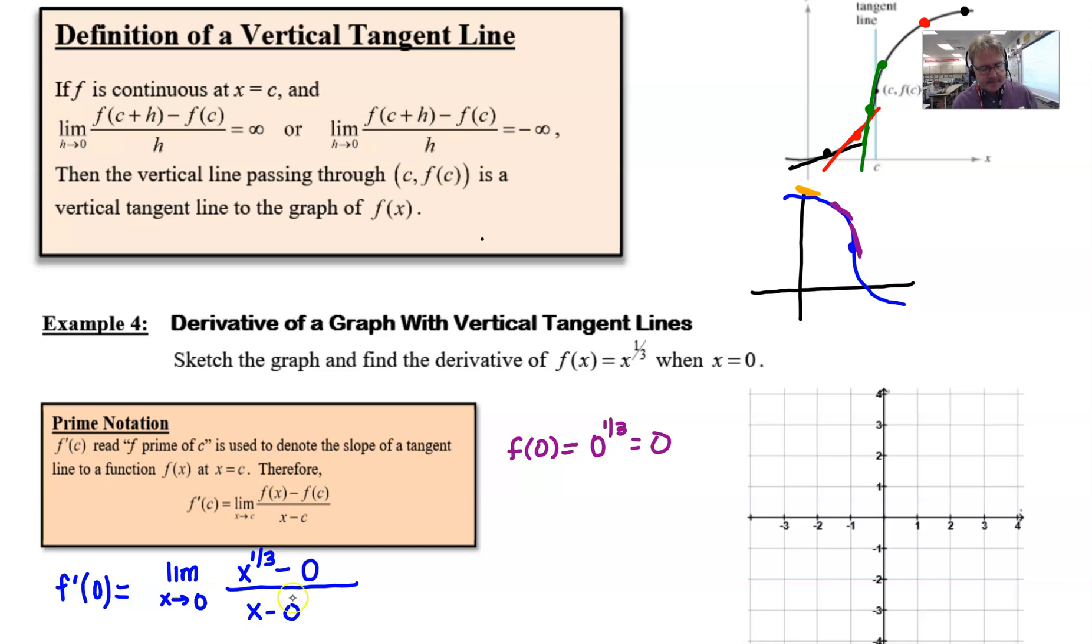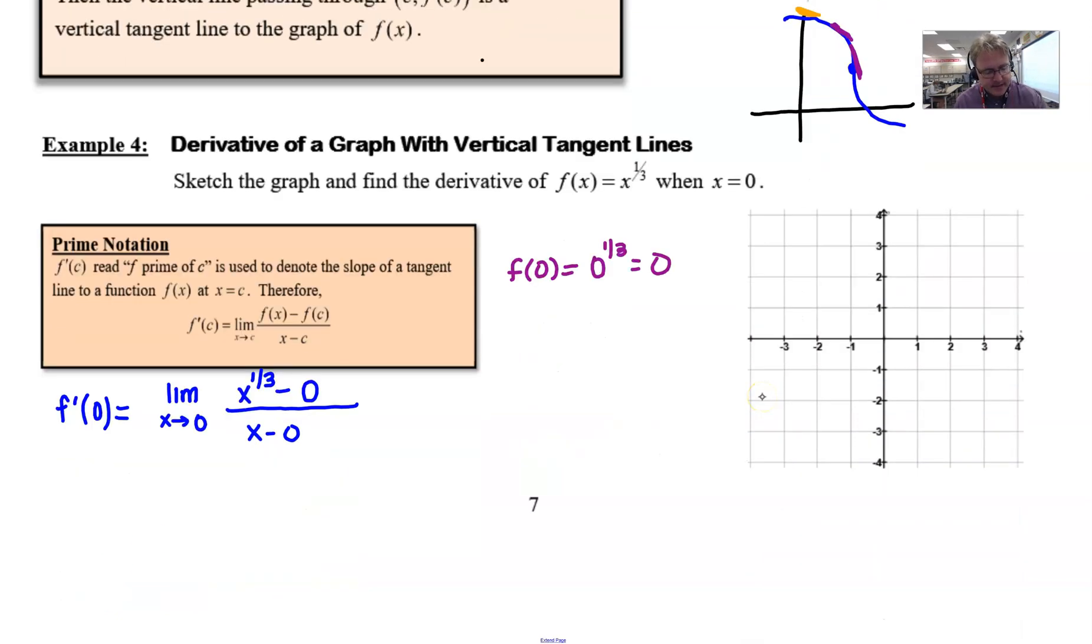It doesn't seem like I'm doing a whole heck of a lot there, but I'll go ahead and subtract the zero nonetheless, and then the denominator is going to be x minus zero. So what do you say we simplify this? We see that x to the one-third divided by x to the first, if you subtract your exponents one-third minus one, you would get negative two-thirds.